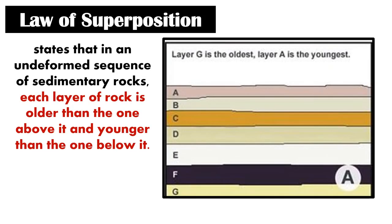The first law used in relative dating is the law of superposition. This law states that in an undeformed sequence of sedimentary rocks, each layer of rock is older than the one above it and younger than the one below it. Simply put, a rock layer that is below another rock layer is older than the one above it.